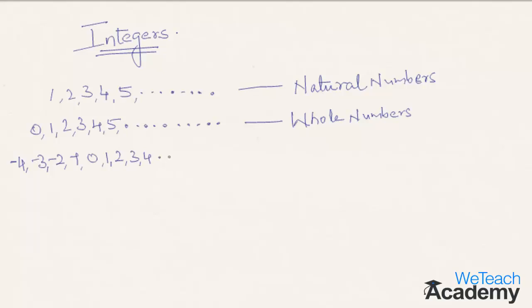So as you can see in this current example we have listed some numbers: minus 4, minus 3, minus 2, minus 1, 0, 1, 2, 3, 4. This whole collection is actually called an integer. So integers is nothing but a collection of negative numbers and whole numbers.